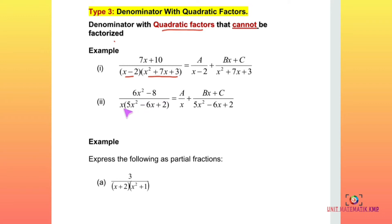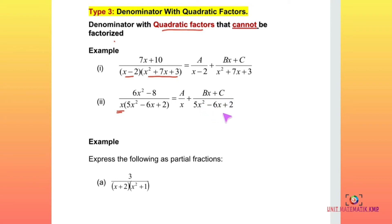Second example: given 6x² − 8 over x(5x² − 6x + 2). The first factor x is linear, so it gives A over x. The second factor 5x² − 6x + 2 is quadratic and cannot be factorized, so the numerator should be linear: Bx + C over (5x² − 6x + 2). After setting up the form, we continue the same procedure to find the values of A, B, and C.